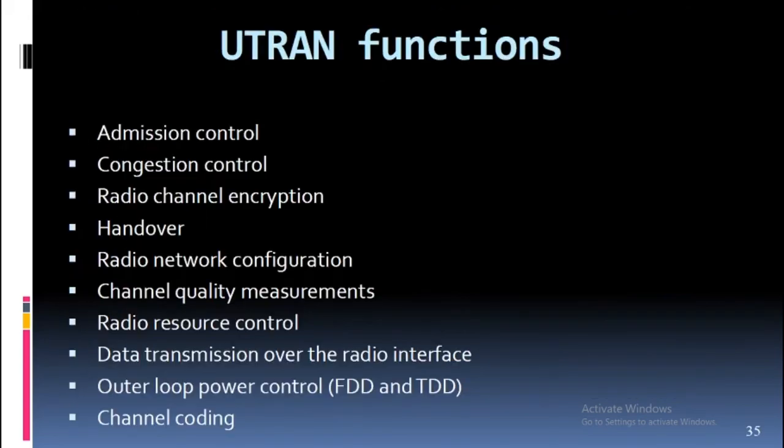UTRAN functions include: admission control, congestion control, radio channel encryption, handover, radio network configuration, channel quality measurements, radio resource control, data transmission over the radio interface, outer loop power control for both FDD and TDD, and channel coding.